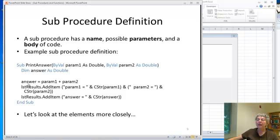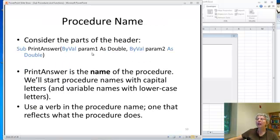Well, it takes our two arguments, adds them up. And it puts some stuff in a list box called list results. First, it adds an item which says what the two parameters are. And then it adds an item which says what the answers are.